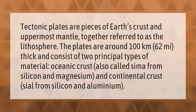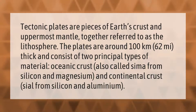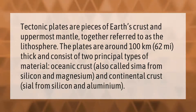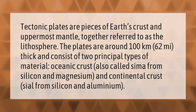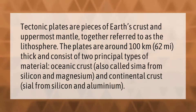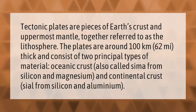Tectonic plates are pieces of Earth's crust and uppermost mantle, together referred to as the lithosphere. The plates are around 100 kilometers (62 miles) thick and consist of two principal types of material: oceanic crust, also called sima, from silicon and magnesium, and continental crust, sial, from silicon and aluminium.